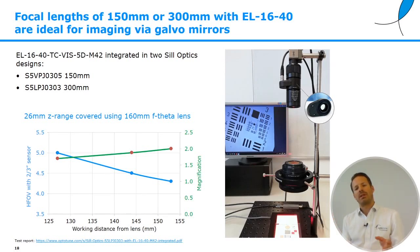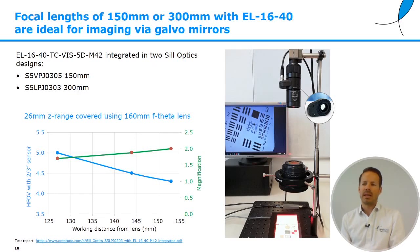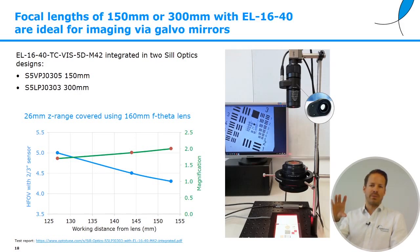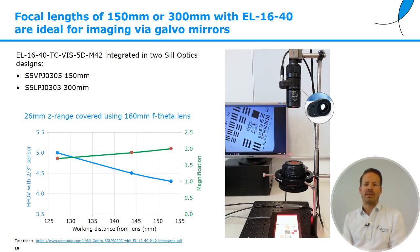On the other spectrum — very narrow field of view — an example is a lens with 150 or 300mm focal length with the EL16-40 integrated, from SIL Optics. It's designed for inline inspection in laser processing systems, where you view the object via galvanometers, often through an F-theta lens. The system focuses at infinity and the F-theta lens brings it to close working distance. The Z range covered is about 26mm, with very nice performance for such a high F number and narrow field of view — a quite nice setup for laser processing.